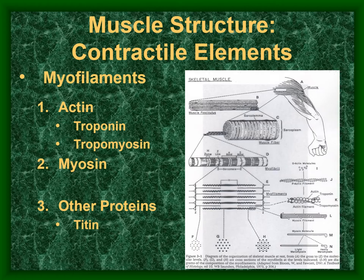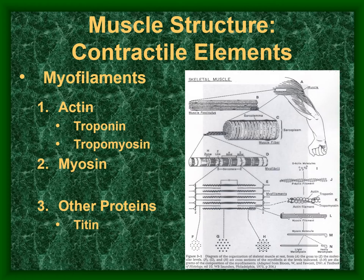The myofilaments include actin and myosin. Troponin is a globular protein rather than a fibrous protein, and tropomyosin is a fibrous protein though not usually considered a myofilament. Another key protein is titin — T-I-T-I-N.